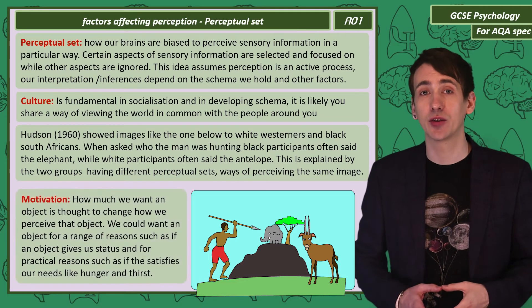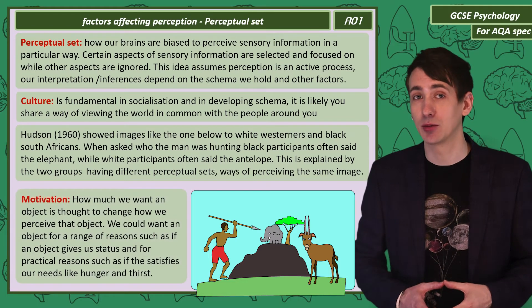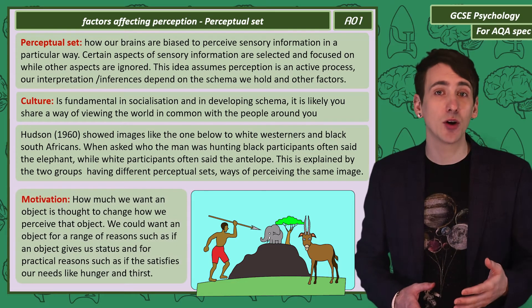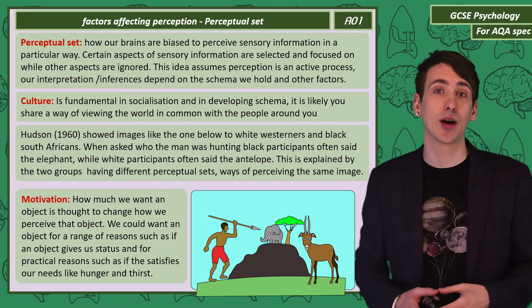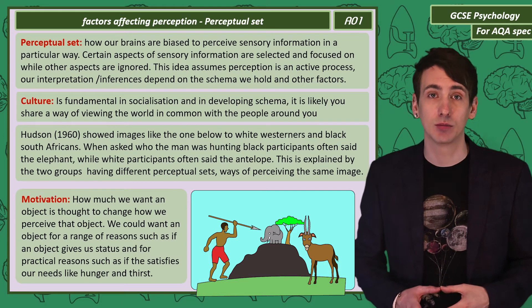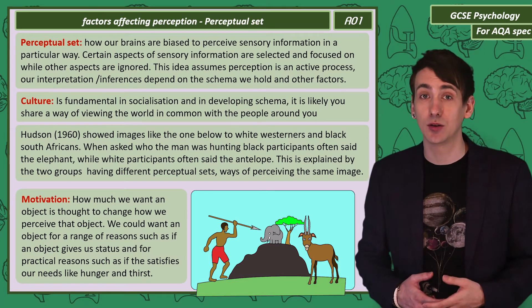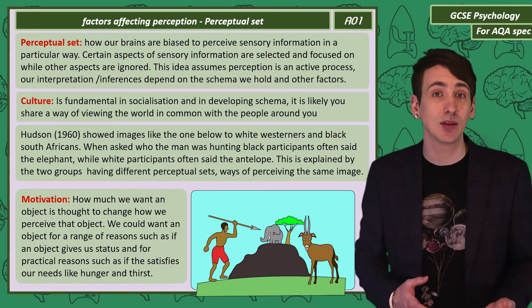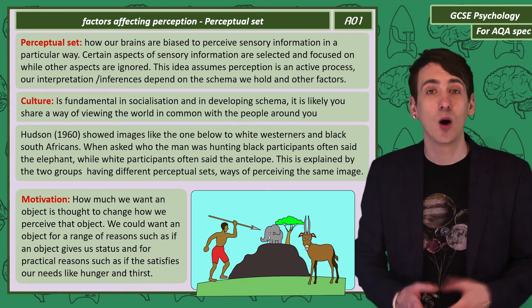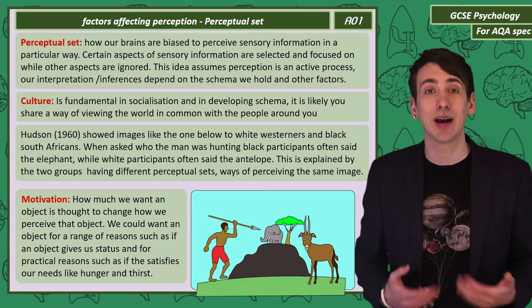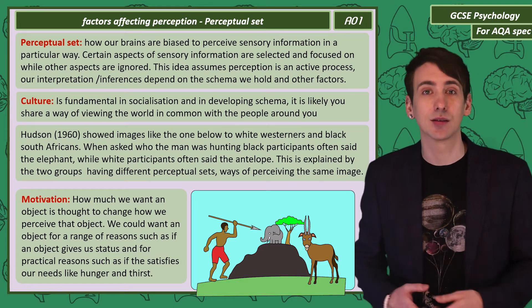Motivation is thought to influence our perceptual set. If we want an object, it will be highlighted in some way in our perception. Our motivation might be to satisfy basic needs like hunger or thirst, or because the object gives us status.